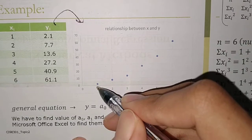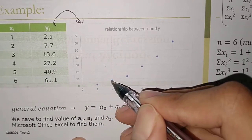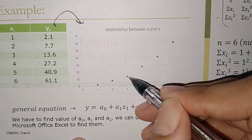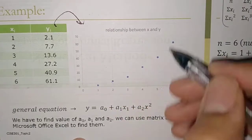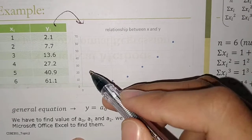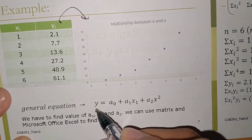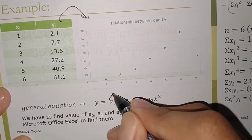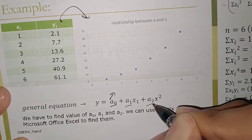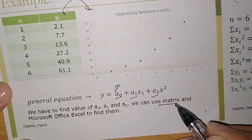We are going to plot these on a Cartesian plane: (1, 2.1), (2, 7.7), (3, 13.6), (4, ...), (5, ...), and (6, ...). This is the visualization of the points on the Cartesian plane. Recall that the general equation is Y = A0 + A1·X + A2·X², and we need to find the values of A0, A1, and A2 using the matrix form we already have.